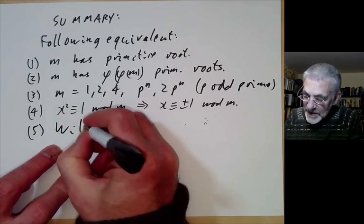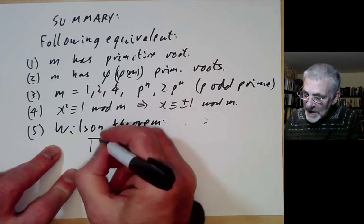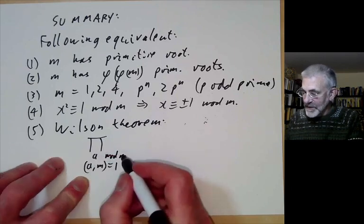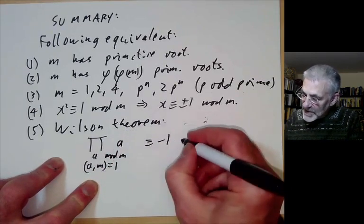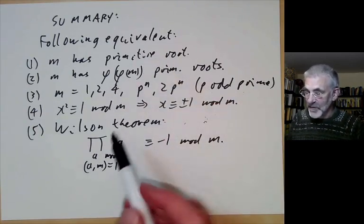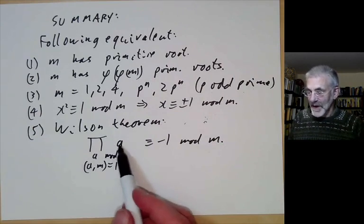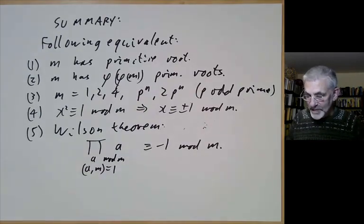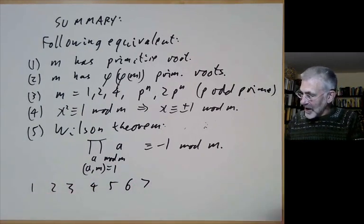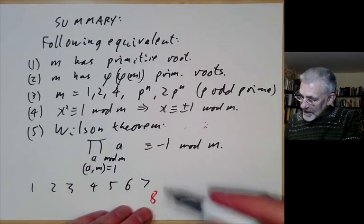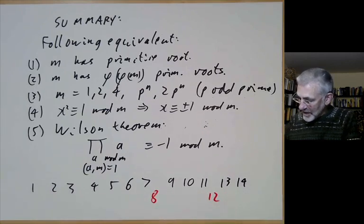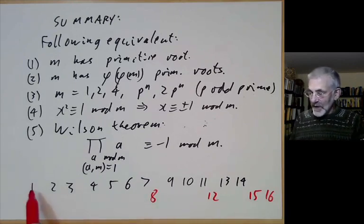The fifth equivalent condition is that Wilson's theorem holds: the product over all a coprime to m is congruent to minus 1 mod m. This is equivalent to the previous condition. If m has a primitive root then this product is congruent to minus 1 because the product runs over all powers of a primitive root. So the numbers satisfying these conditions are 1, 2, 3, 4, 5, 6, 7; 8 does not; 9 does; 10 does; 11 does; 12 does not; 13 does; 14 does; 15 does not; 16 does not; and so on.